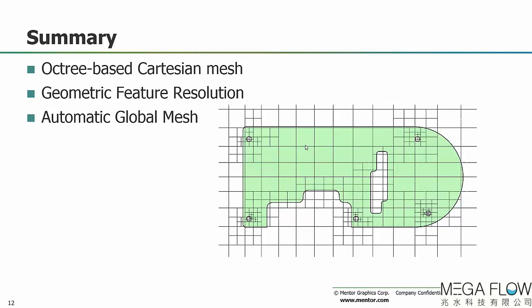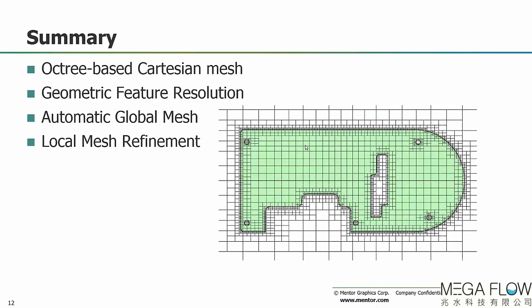Meshing begins with the automatic global meshing process, where based on minimum feature size and minimum gap size all features within the geometry are resolved. The user then has full control to further refine the mesh in areas of the solid, the fluid, or the solid-fluid boundaries.